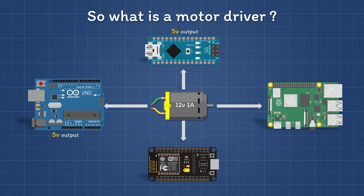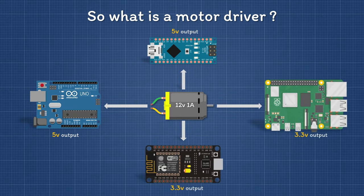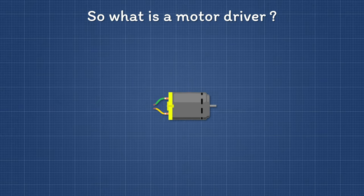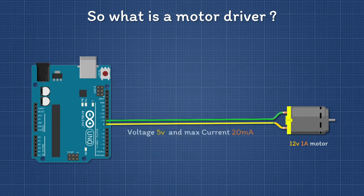Arduino Uno or Arduino Nano microcontrollers are capable of providing only 5 volts output, whereas Raspberry Pi or NodeMCU can only provide 3.3 volts output. So if we connect the motor with the Arduino directly, then the motor will only get 5 volts and 20 milliamps current. The motor will not work at full potential and it could also damage the Arduino.